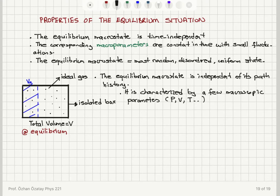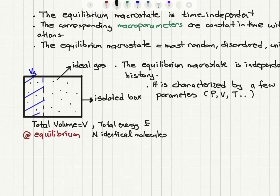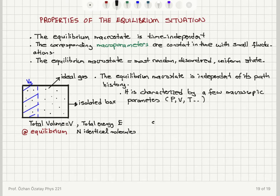When we apply this to an ideal gas contained in an isolated box, if we have reached the equilibrium state, we have the most uniform or even distribution of gas molecules inside this chamber. The total volume is V, the total energy is E, and we have N identical molecules. The average energy per molecule, ε̄, will be E divided by N. Energy is distributed uniformly over the gas molecules, with small fluctuations around this average value.